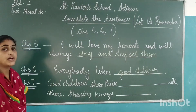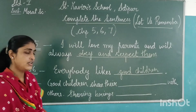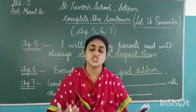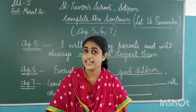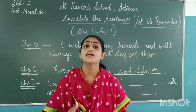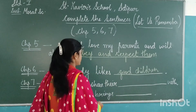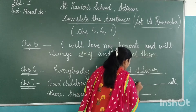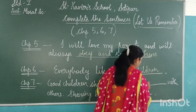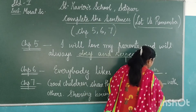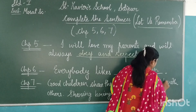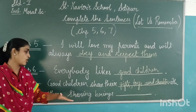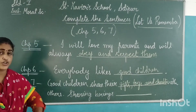The last one is chapter number 7, which was about friends. Good children share their gifts, toys and chocolates with others. Good children share whatever they have with others.